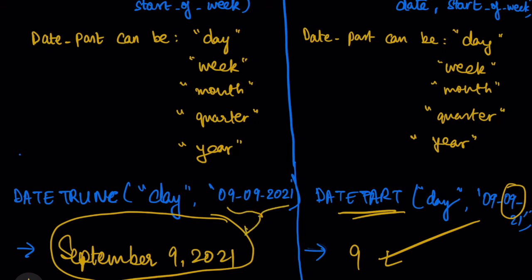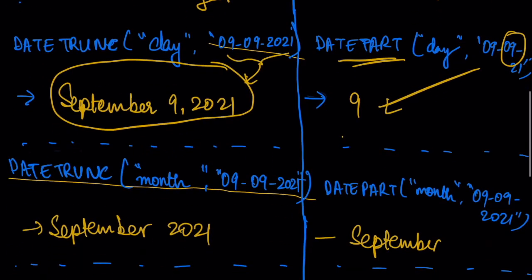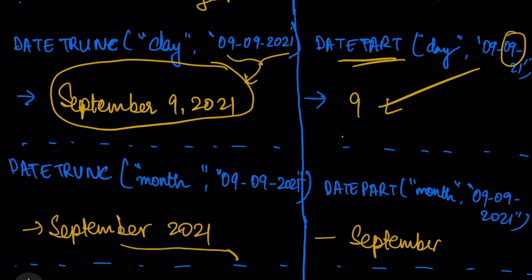For another example, when you use DATE_TRUNC with 'month' on September 9th, 2021, Tableau returns September 2021 — the month and year together. Whereas when you do the same with the DATE_PART function, what Tableau actually returns is just the month number — only that integer value.